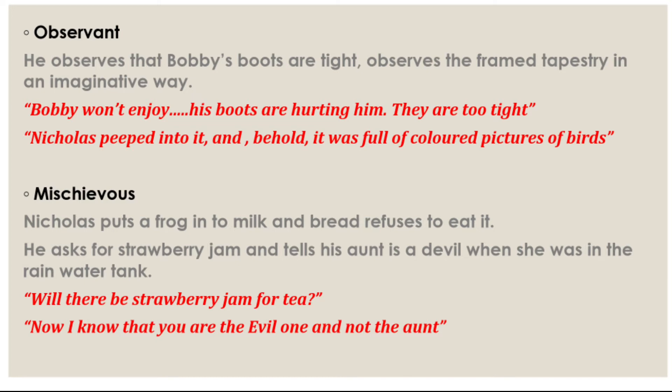Nicola is also really observant. He observes that Bobby's boots are tight and observes the tapestry in an imaginative way. He says, 'Bobby won't enjoy — his boots are hurting him, they are too tight.' So Nicola had already observed that Bobby's boots were too tight before the aunt noticed. Another quotation is: 'Nicola peeped into it and behold it full of colored pictures of birds.'